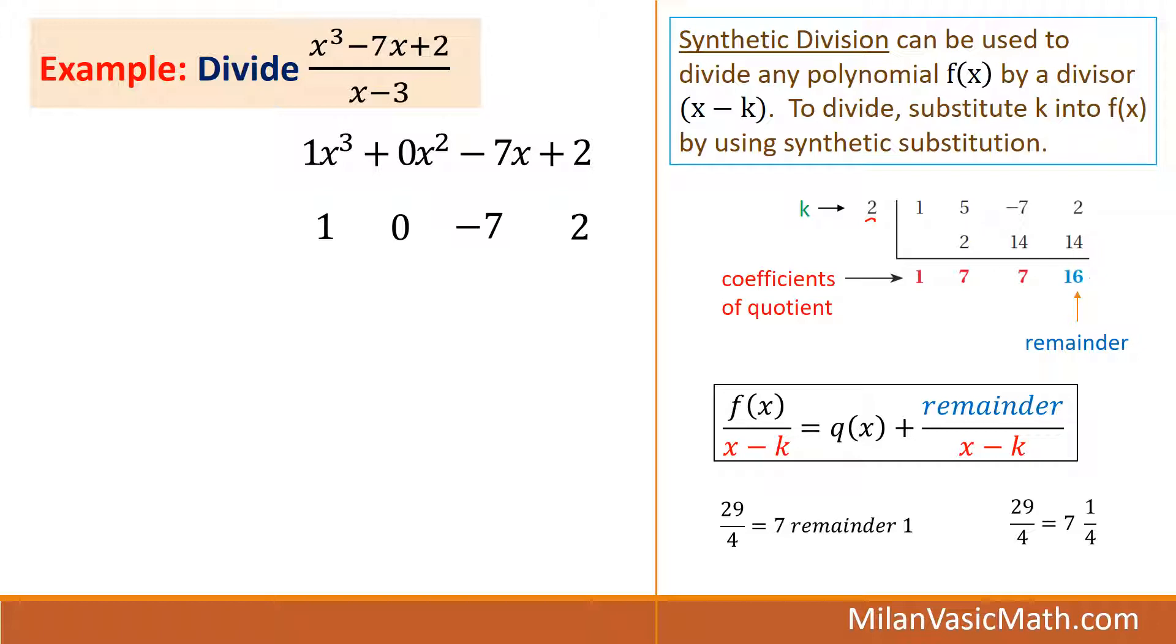We did something very similar before. Make sure you have the placeholder. So 1, 0, negative 7, 2. And now we just have to determine what is the k value. Well, x minus 3 is what we're dividing by. So k is 3. It's always the opposite of what's after x. And I'm just using a little bit of a different visual synthetic substitution here. But it's all the same thing. Put the arrow down. 3 times 1 is 3. Add 0 plus 3, that's 3. 3 times 3 is 9. Add those. And 3 times 2 is 6. If it sounds familiar, it's because we just did it.